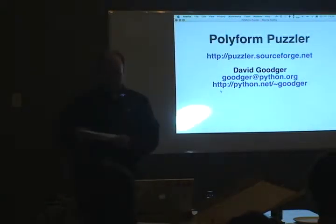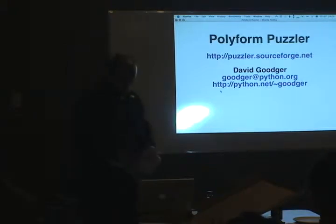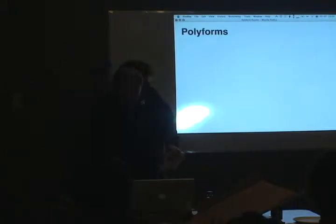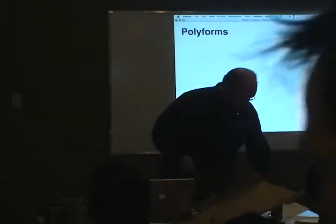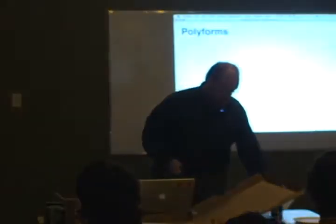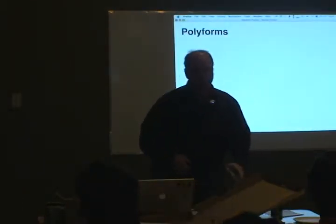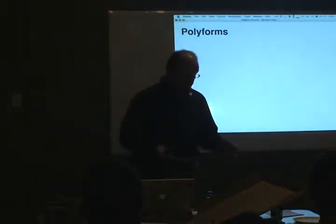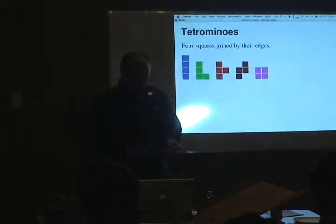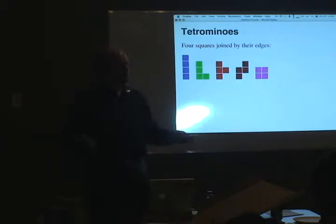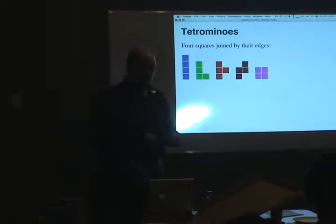I have four goals today with this talk, and my first goal is to introduce you to something called polyforms. Polyforms are shapes that are constructed by combining identical base shapes like squares or triangles or cubes, and the most famous ones are tetrominoes. You've seen those before in Tetris, right? These are all possible shapes you can make with four squares joined together by the edges.